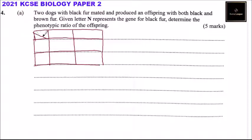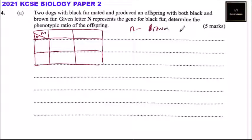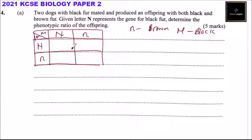We can use this to represent the male and the female. We can use lowercase n to represent the non-active gene of brown, because the offspring had black and brown. So lowercase n represents brown color genes, and uppercase N will represent black, as we are told. So you can say the male had both black and brown genes, although the black color gene was dominant.